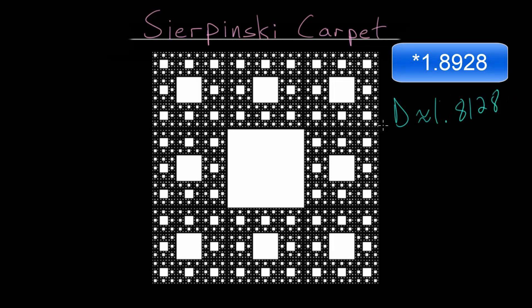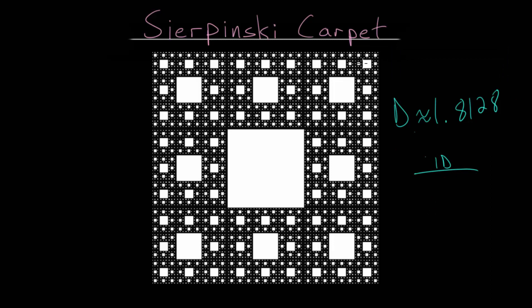Remember that the dimension of a line is dimension one, the dimension of a square is dimension two, the dimension of a cube is dimension three, and so on. So this Sierpinski carpet is close to the dimension of a square, but not exactly.